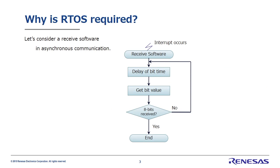Let's write this out in a flowchart. The software is activated through an interrupt. It waits the length of the start bit, receives the data, and after this is repeated eight times, it finishes. This is an extremely simple program.